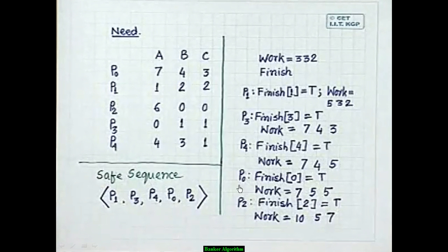We keep repeating until all Finish values equal true, working through P4, P0, and P2. The result is a safe sequence: P1, P3, P4, P0, P2.